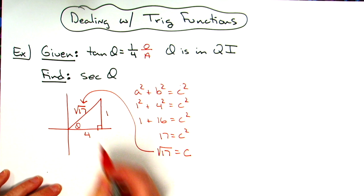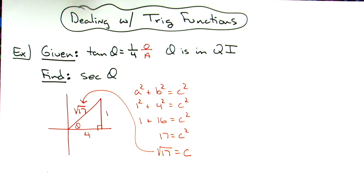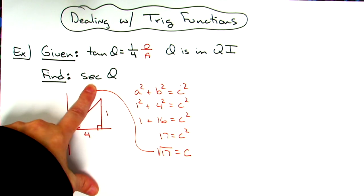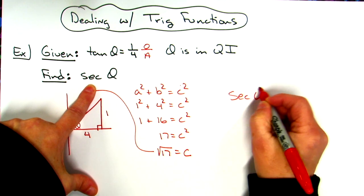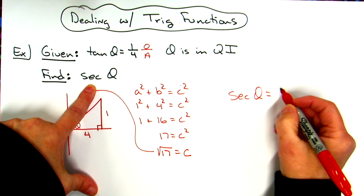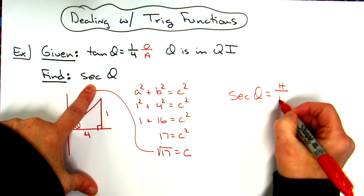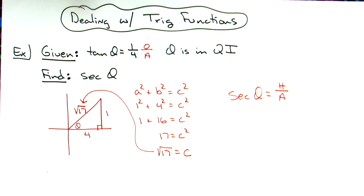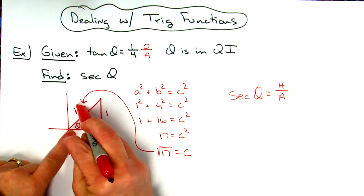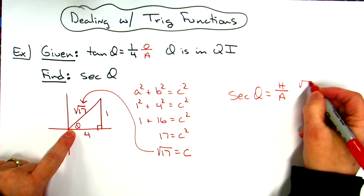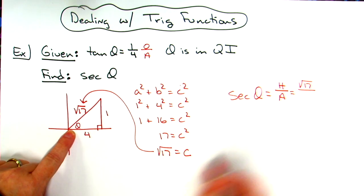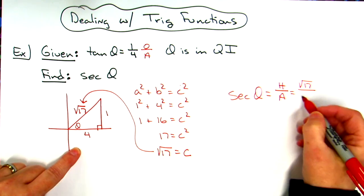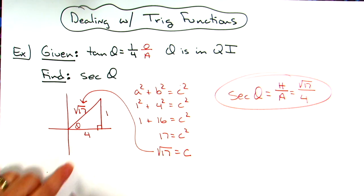Now I know all sides of my right triangle. I need to find secant. Well secant theta is going to be hypotenuse over adjacent if you've got your right triangle trig definitions memorized. So then I can just look, my hypotenuse is square root of 17 and my adjacent side then is 4. So then secant theta is going to be square root of 17 over 4.